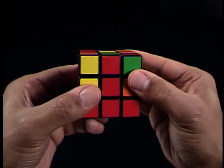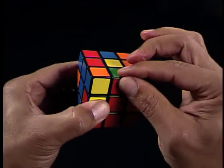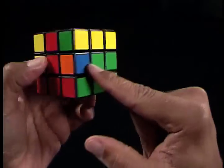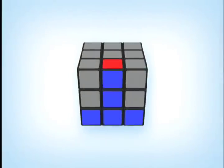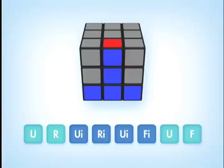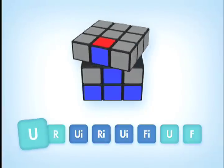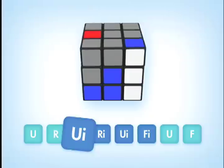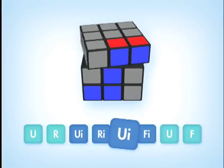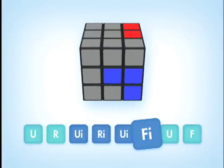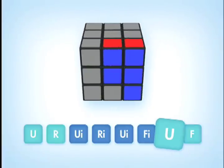If you notice, this edge piece's top U-face color has to move to the right because it matches the center piece color on the right side. Now according to the solution guide, if you're moving the edge piece in the same direction indicated by the arrow in the picture, which is pointing to the right, then we need to follow the sequential moves of U-R-U-I-R-I-U-I-F-I-U-F.